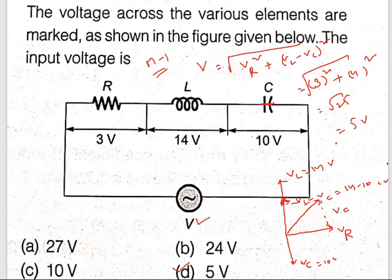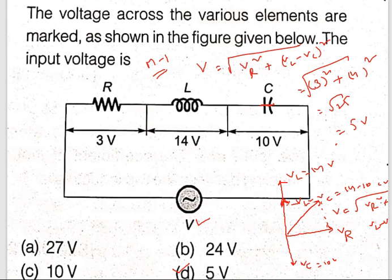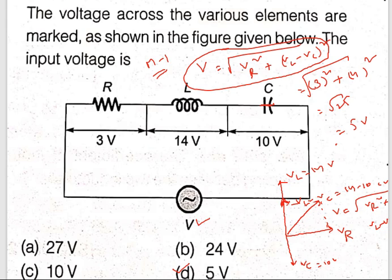V equals root over VR squared plus VL minus VC whole square, as discussed at the start. This formula can be derived using the phasor diagram: VR is the resistive voltage, VL is leading, VC is lagging, resultant is VL minus VC, and combining that with VR gives V equals root over VR squared plus VL minus VC whole square. Solving gives 5 volts.